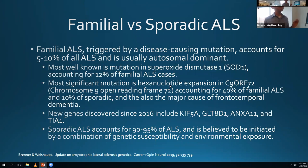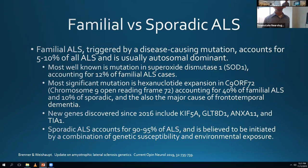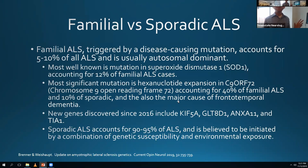C9ORF72 is also a mutation seen in some frontotemporal dementia cases. There's a lot of overlap between ALS and FTD - 15% of ALS patients actually meet diagnostic criteria for FTD, and about 50% have executive dysfunction on cognitive exam. You can see the C9ORF72 mutation in some FTD patients who don't even have any ALS phenotype. Some sporadic ALS cases will have these mutations due to low penetrance or novel mutations.